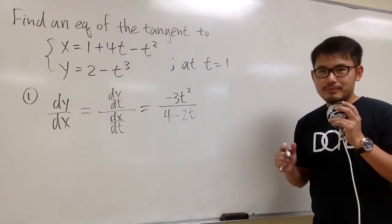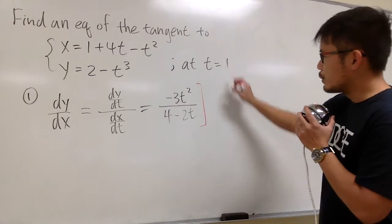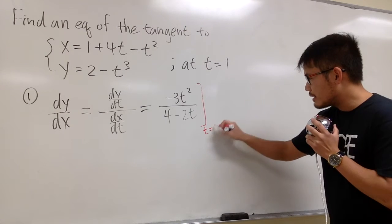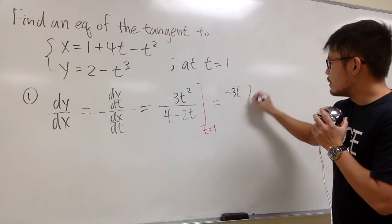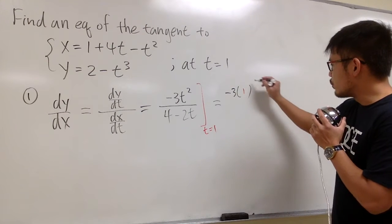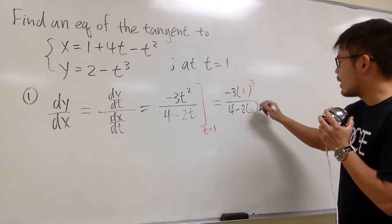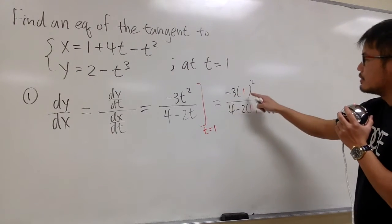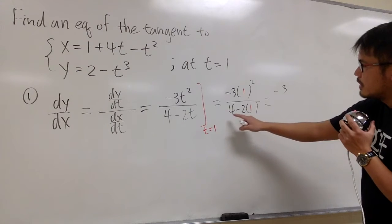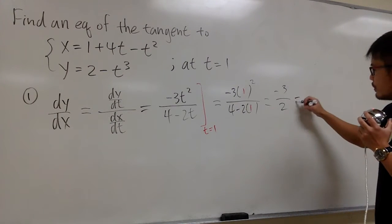And we need a value so we can get a slope. We have to plug in t equals 1 into this expression. We get negative 3 times 1 squared over 4 minus 2 times 1. On the top you get negative 3, on the bottom you get 4 minus 2, which is just 2. And this is the slope value that we are going to use.